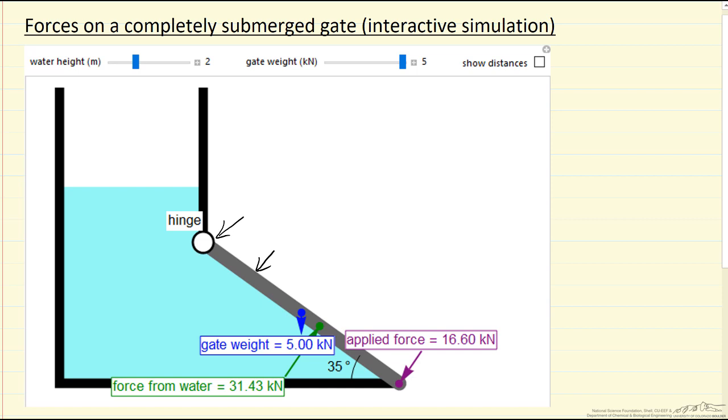What keeps it closed is that the gate has a weight, and then we're pushing on the gate here. So the idea is the gate can swing open this way because water is pushing against the gate, and that force is perpendicular to the surface of the gate.